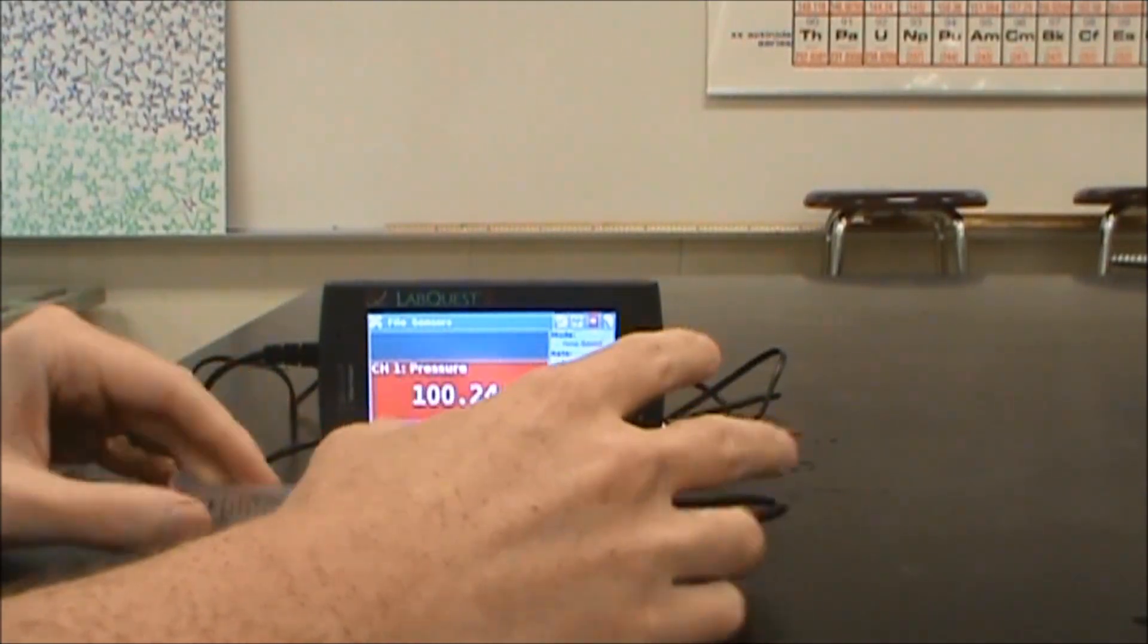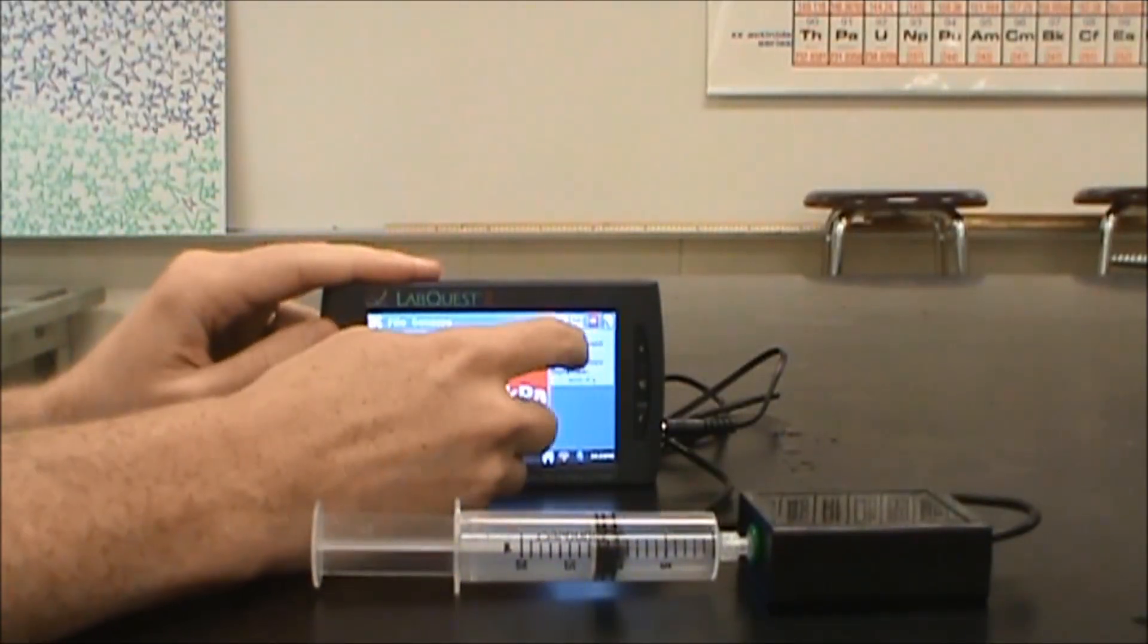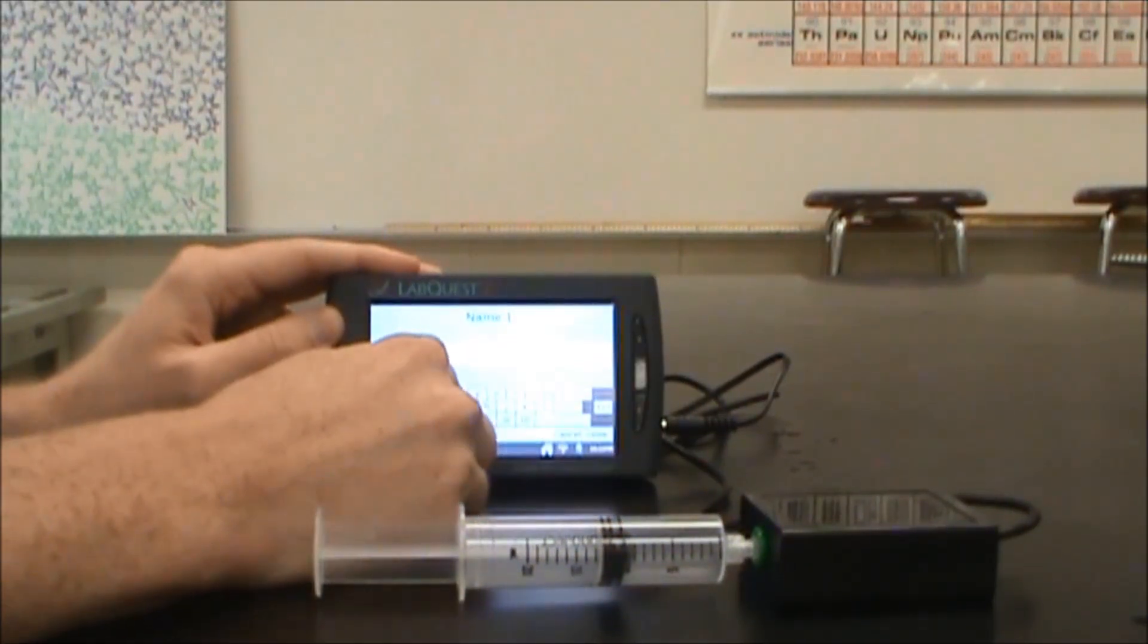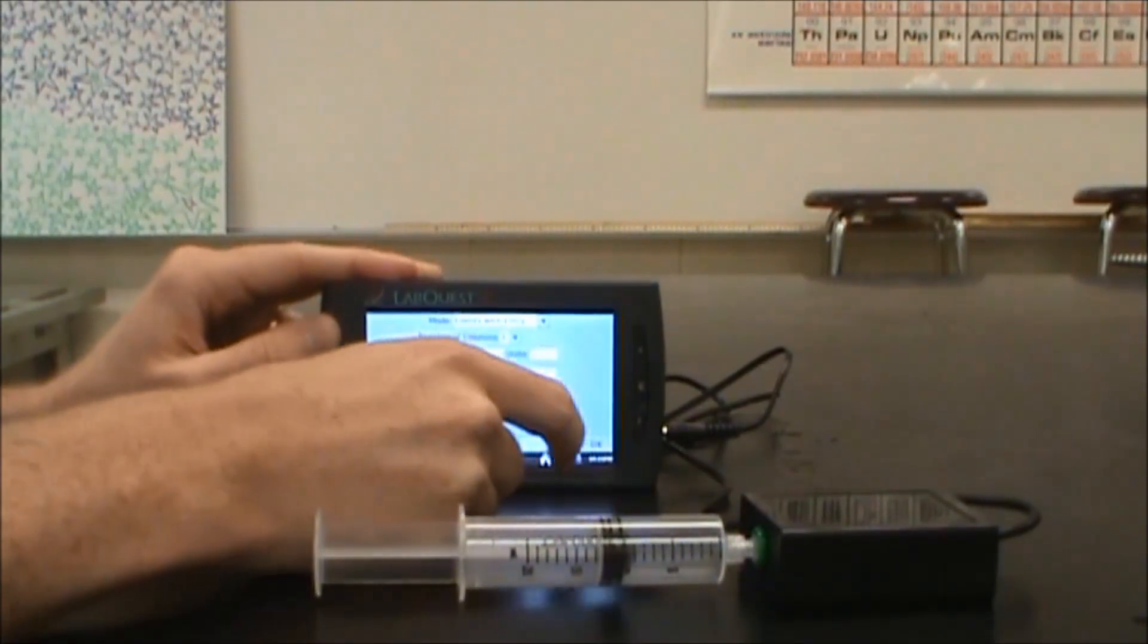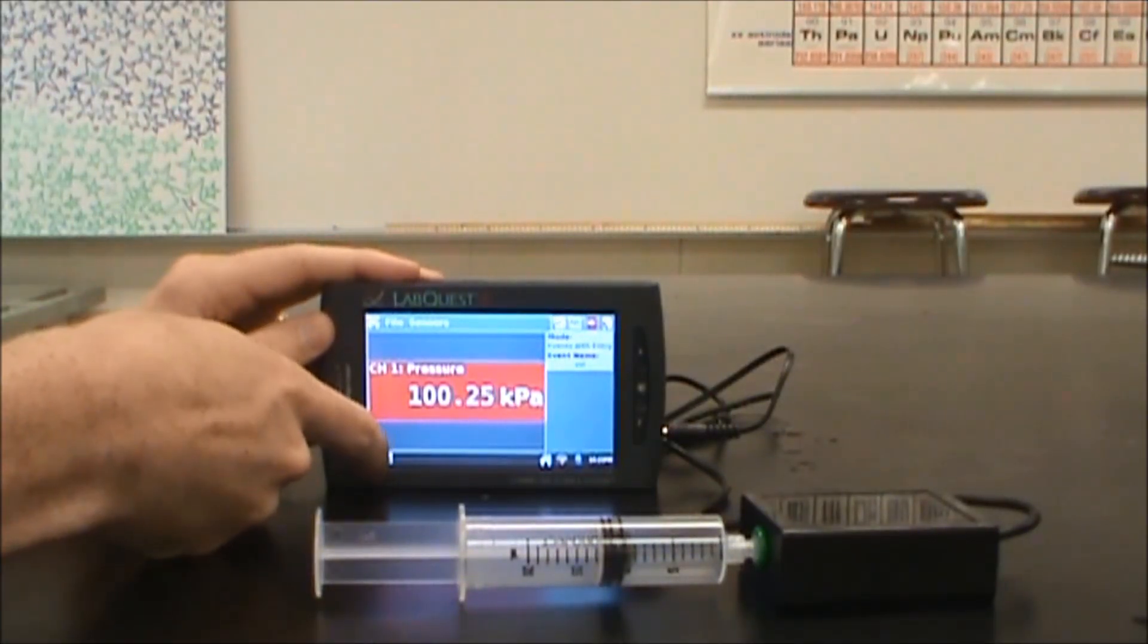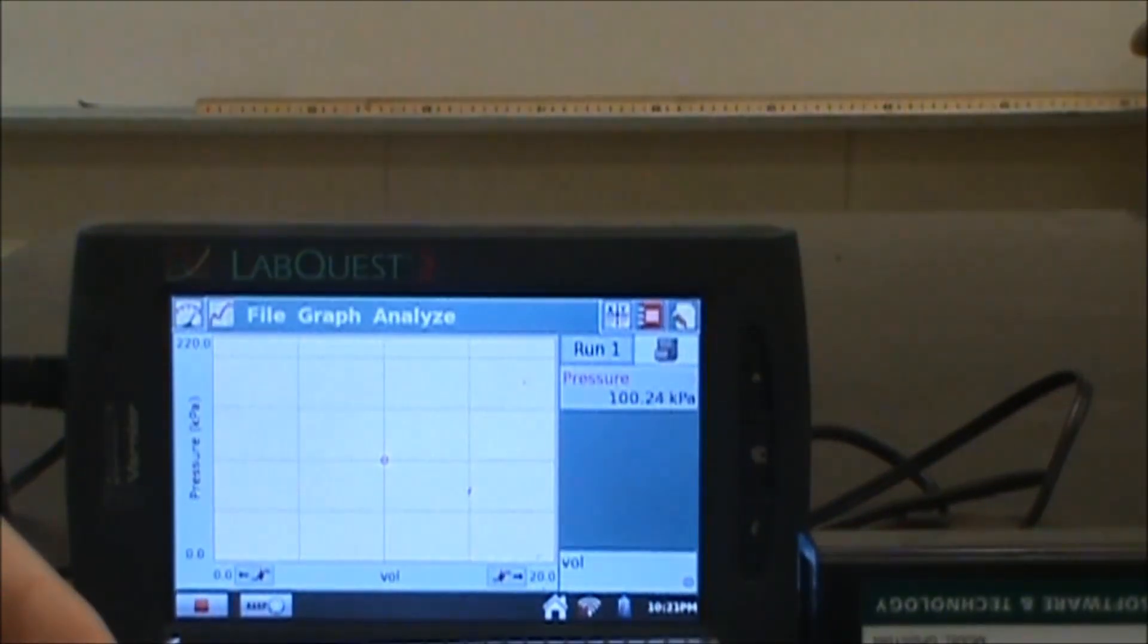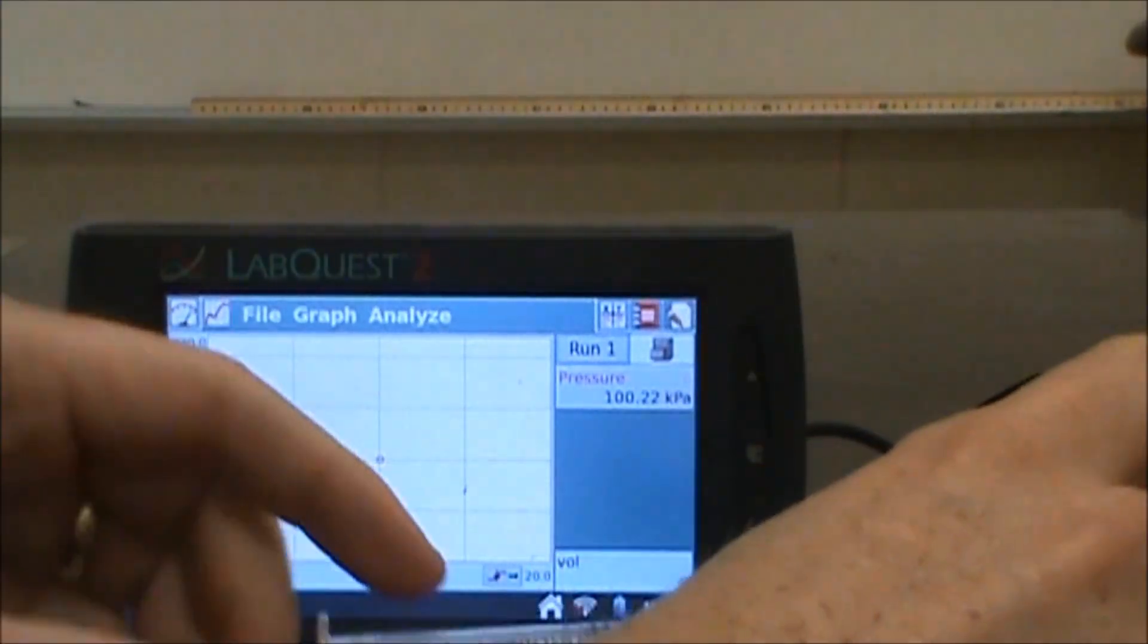I'm going to go ahead and hook that up. I'm not going to over tighten or anything crazy. To get this to function in the way you want, you want to go from time-based mode to events with entry. We're going to do the volume manually. I'll just put VLL there. When I hit play now, this is going to allow me to figure out what the pressure is inside of here at each given volume.